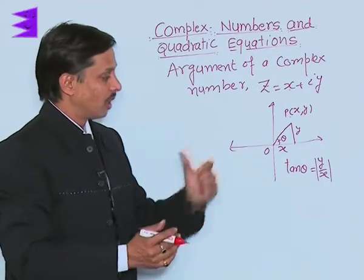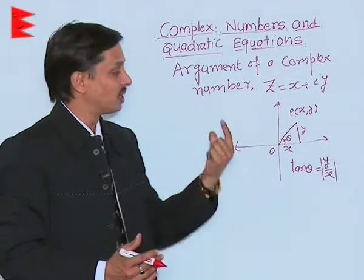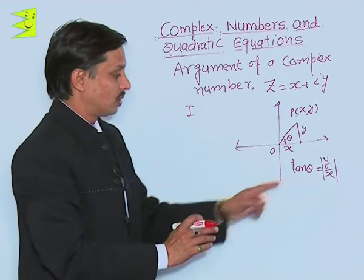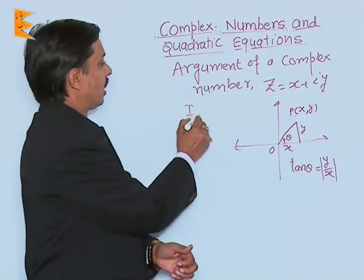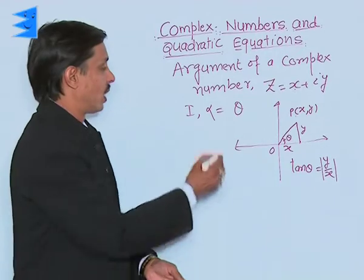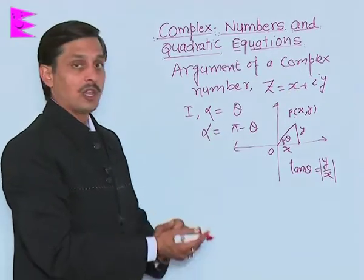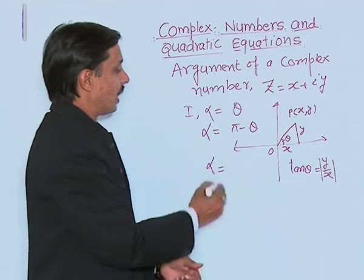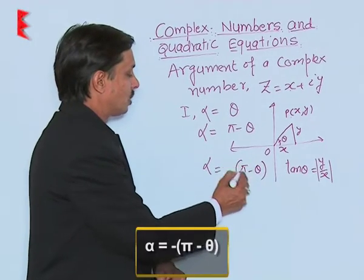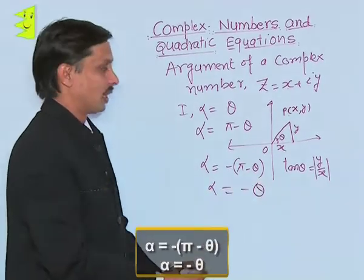The value of the argument depends upon the quadrant in which the combination of real and imaginary parts lies. If the point is in the first quadrant and the argument is alpha, then alpha equals theta. If the point is in the second quadrant, then the argument is given by pi minus theta. If the point lies in the third quadrant, then alpha is given by negative of pi minus theta. If the point is in the fourth quadrant, then alpha is given by minus theta.